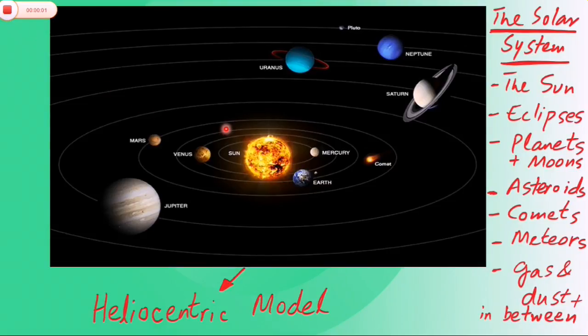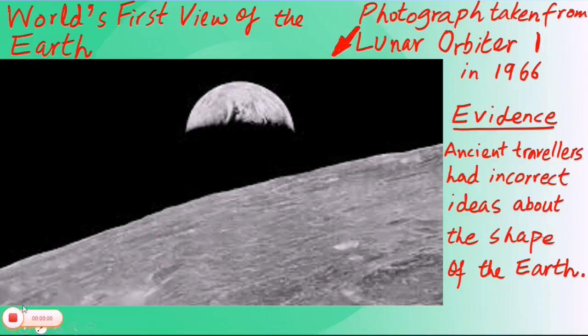The solar system was formed 4.6 billion years ago. It consists of a central star, the Sun, the eight planets orbiting the Sun: Mercury, Earth, Venus, Mars, Jupiter, Uranus, Neptune, Saturn, the dwarf planet Pluto, moons, asteroids, comets, meteors, interplanetary gas, dust, and all the space in between them.